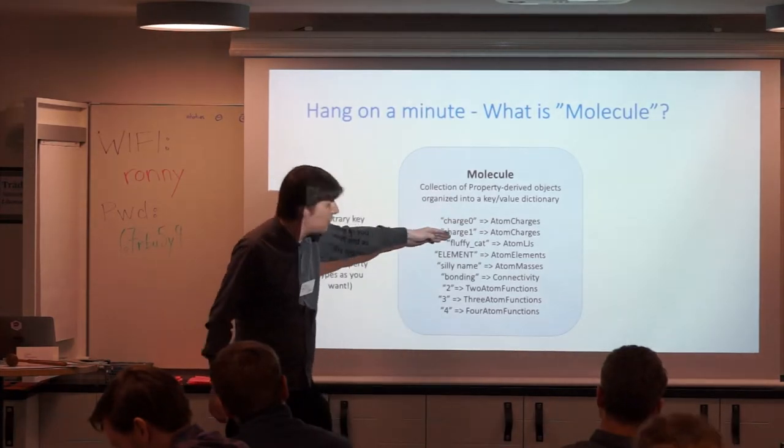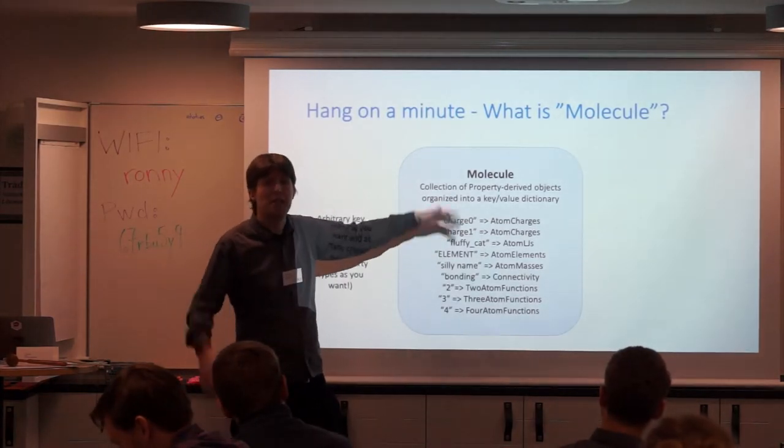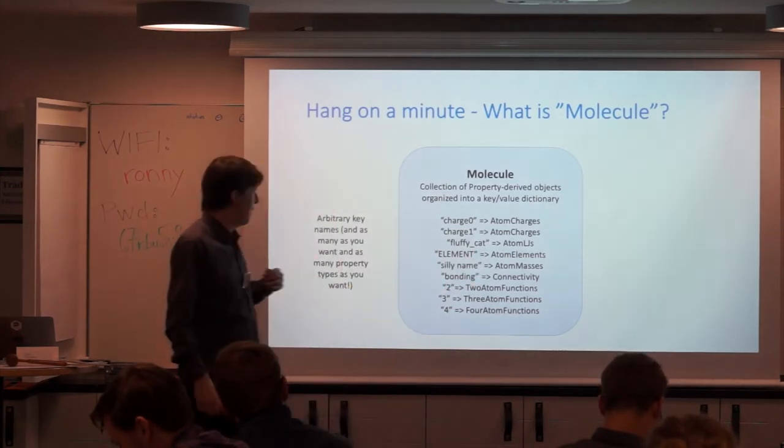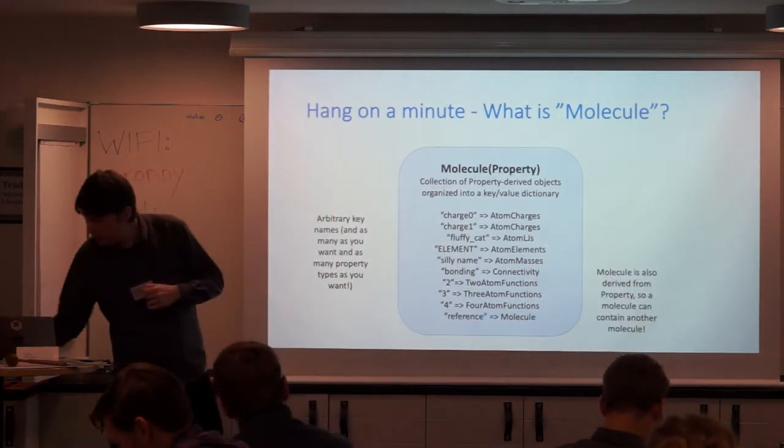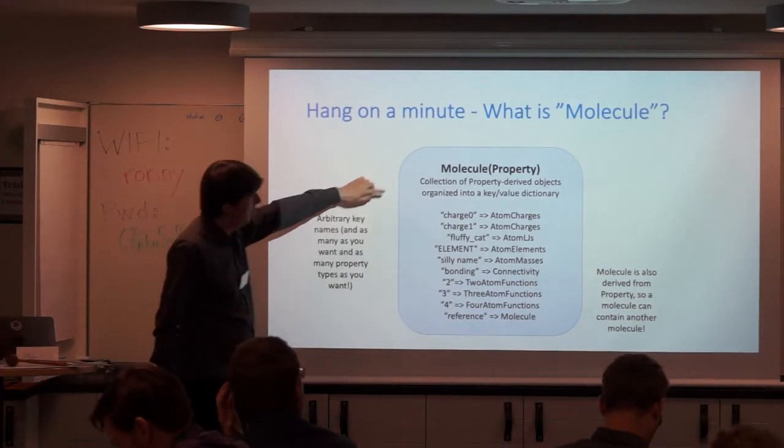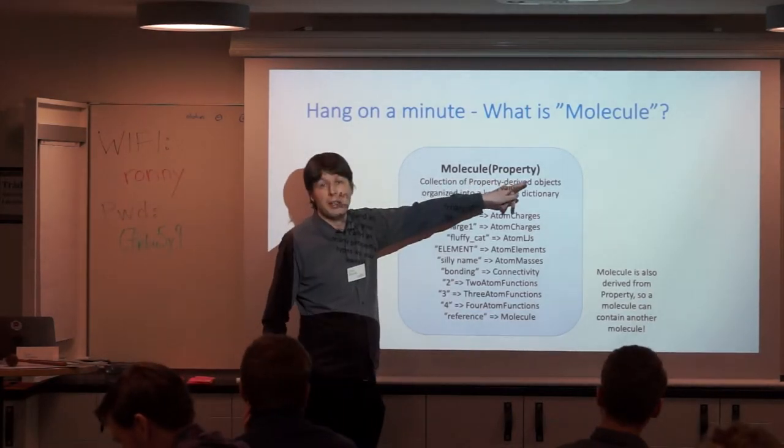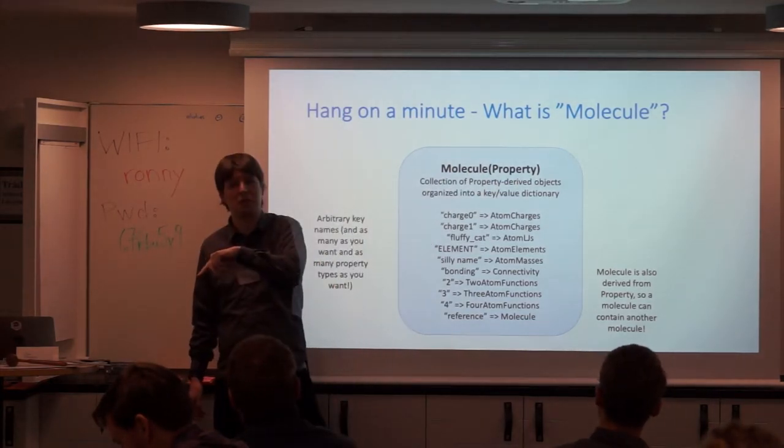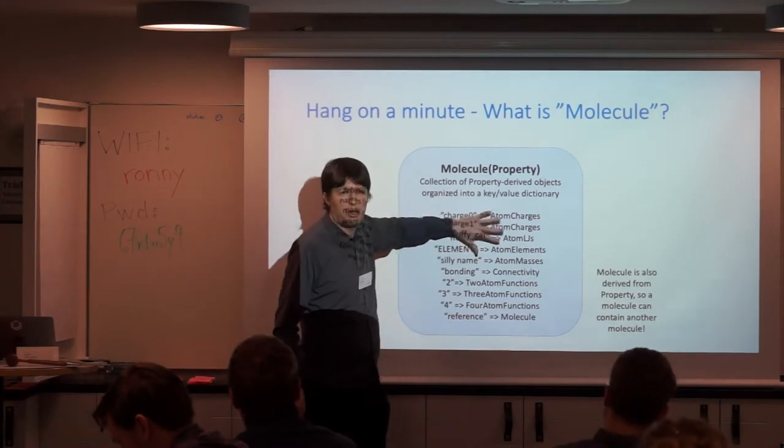But the key thing with this key value dictionary is that it's completely arbitrary. I can add whatever keys I want. If I want a key called fluffy cat and I associate it with atom LJs, that's a perfectly valid molecule. We don't do ontology. It's a container that can contain arbitrary data. We're not telling people what to name it. But this means that when we do relative binding free energy calculations, we can have charge0 and charge1 to represent two states of charges. We can call elements, elements, silly name, atom masses, etc.